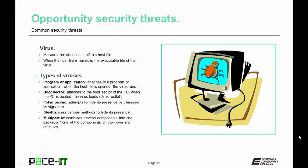There are different types of viruses. A program or application virus attaches itself to a program or application. A boot sector virus attaches itself to the boot sector of the PC and delivers its payload when the PC boots up. Polymorphic viruses attempt to hide their presence by changing their signature on a regular basis. Stealth viruses are similar to rootkits. Multipartite viruses combine several components into one package where none of the components on their own are effective. Viruses can also combine several of these types into one package.